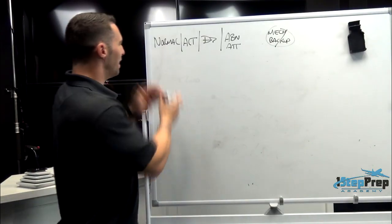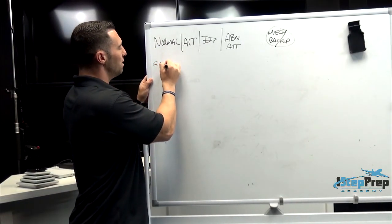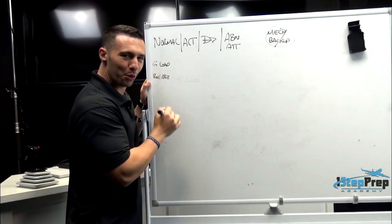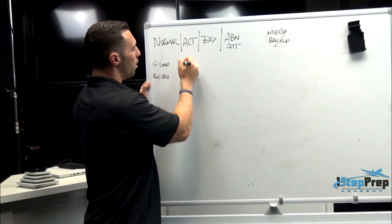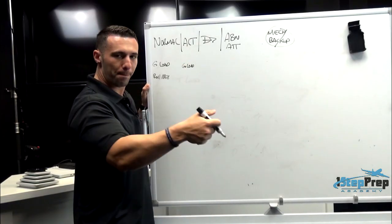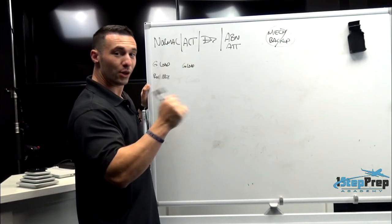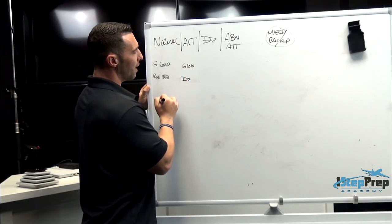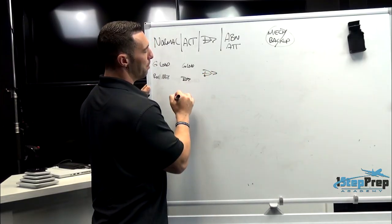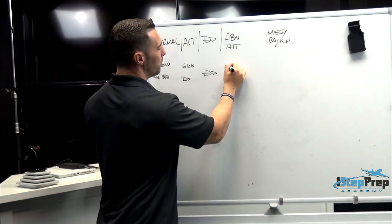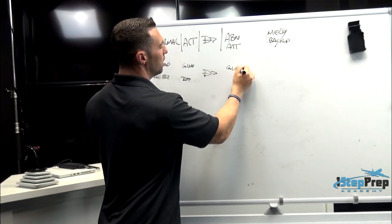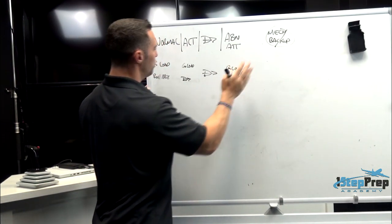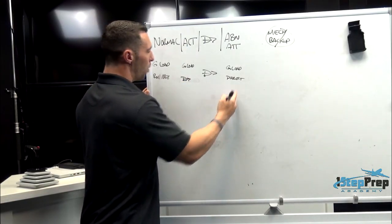Side stick relationship: in normal law, in the pitch axis, we have G-load and roll rate. In alternate law, we have G-load in the pitch axis but a direct relationship in the roll axis. In direct law, we have a direct relationship with both. In abnormal attitude law, we very much do have G-load and then later it transitions to direct — kind of like a pseudo-alternate law. Normal law also has different phases of flight where this changes.